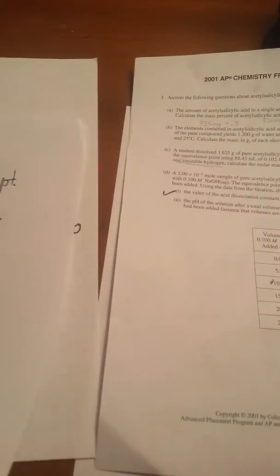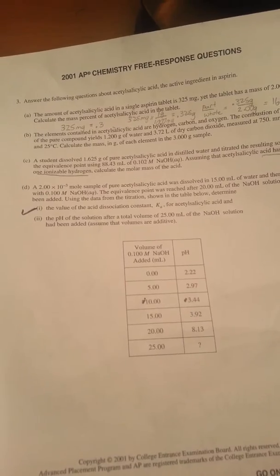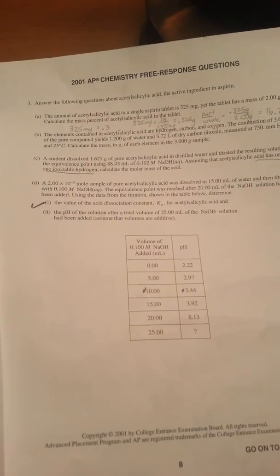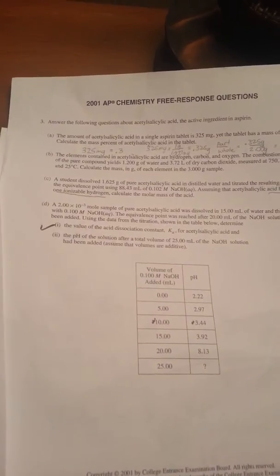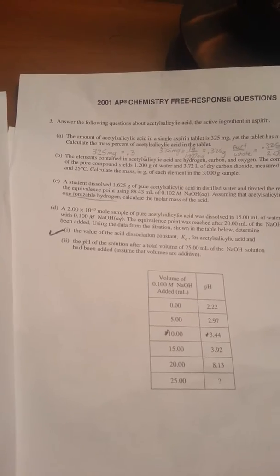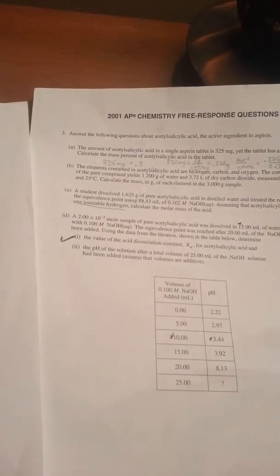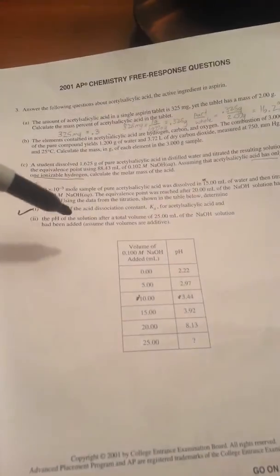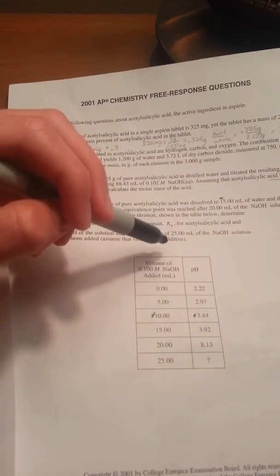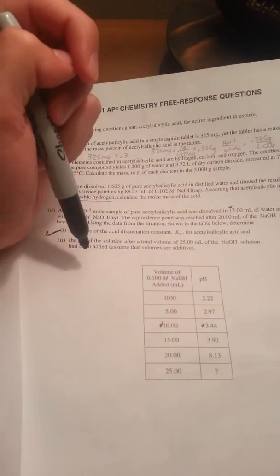Now the second part: the pH of the solution after a total of 25 milliliters of the NaOH solution has been added. Assume that the volumes are additive. Right away, they're adding 25 milliliters of NaOH and we started with 15 milliliters of acid, so this is a 40 milliliter solution. This is after the equivalence point because the equivalence point was 20 and we're at 25. What's dictating the pH is the excess OH added - an excess of 5 milliliters.